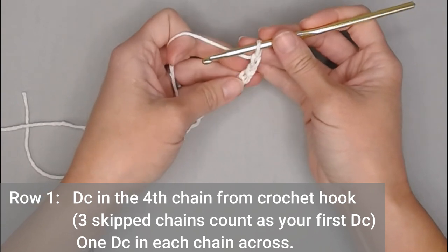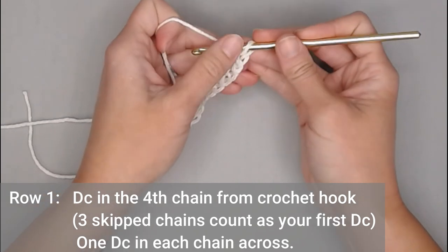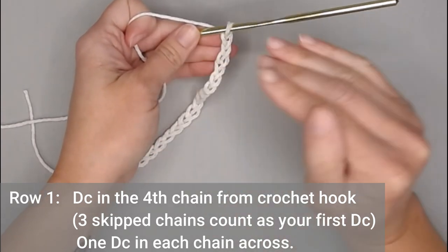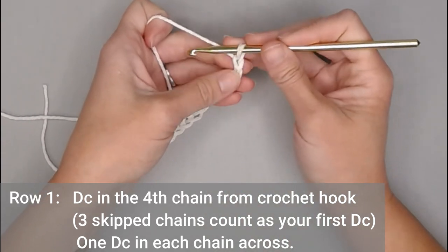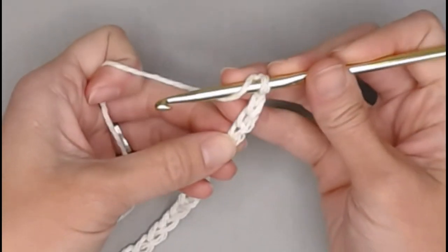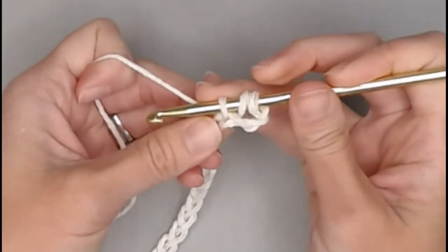For row one, you will double crochet in the fourth chain from your crochet hook. Remember that the loop on your crochet hook does not count as a chain. We want to look at our V-stitches. One, two, three, four, double crochet in that fourth chain.